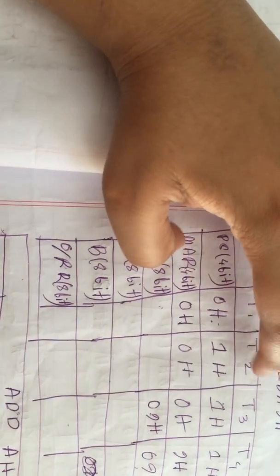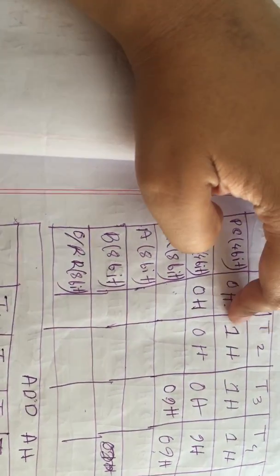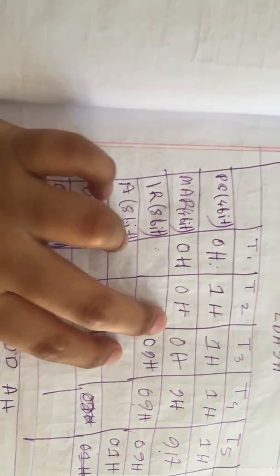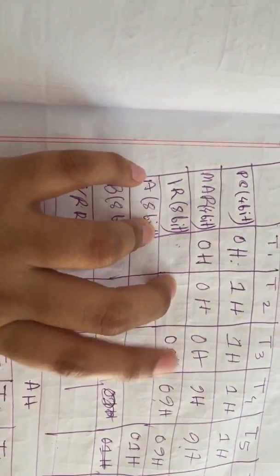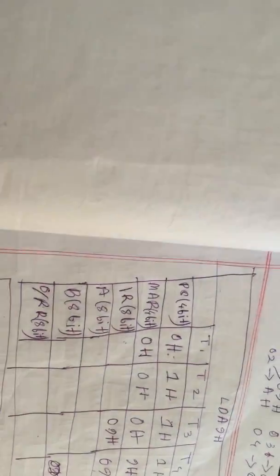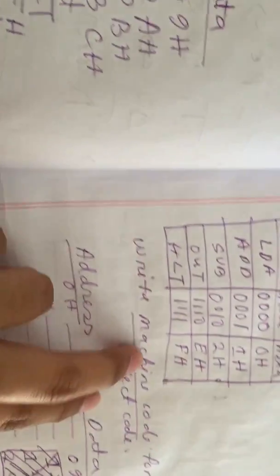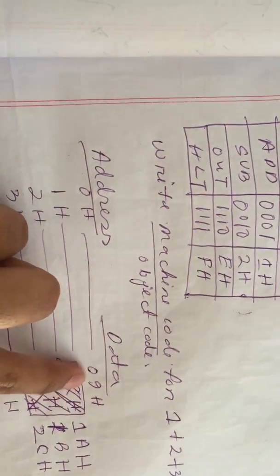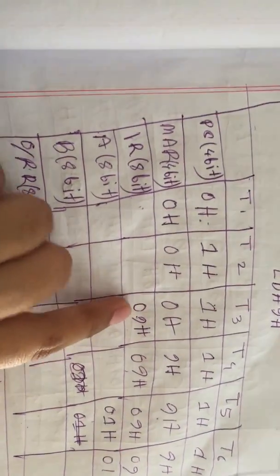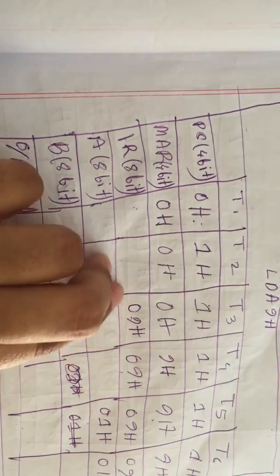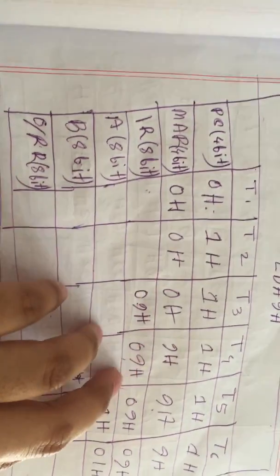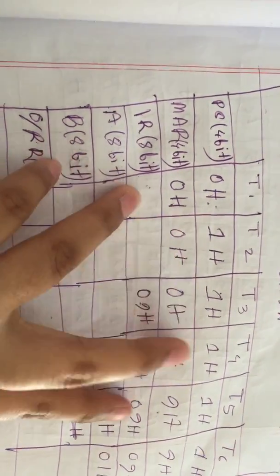In T2, we increment 0H to 1H — we increment by 1. In T3, we have changes in the IR. The value at address 0H is 09H, so we write 09H in the IR. Then we take the lower 4 bits, which is 9H, and write 9H in the MAR for the T4 cycle.